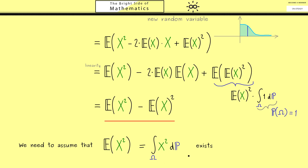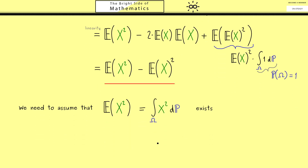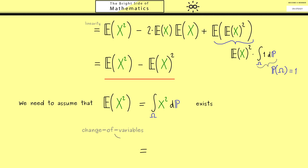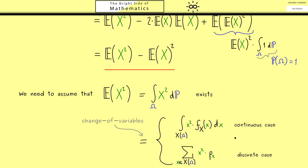If you don't want to deal with abstract integrals, we can do the same as for the normal expectation E[x] and go to the two important cases using the change of variables formula. We can then look at the continuous case and the discrete case. The details are the same as for the expectation — the only difference is that now we have x squared. In the continuous case we have a pdf, and in the discrete case we have a probability mass function.